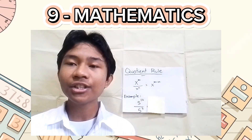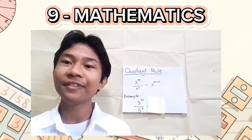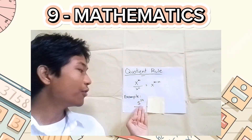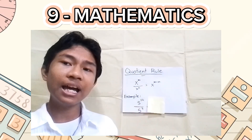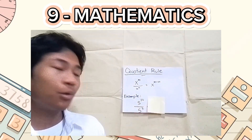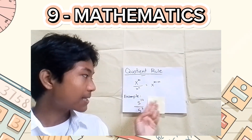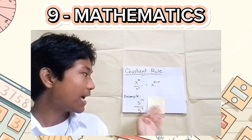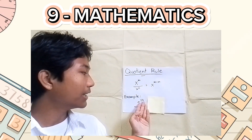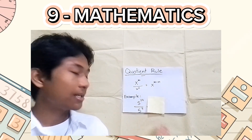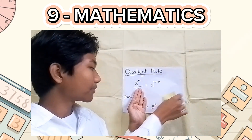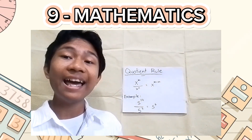Now, to further understand this lesson, let us try to solve an example. Here we have s raised to 10 over s raised to 5. Like what we did earlier, if the variable is the same, we will just copy the variable s and then subtract the exponents. So 10 minus 5 is equal to 5, so the correct answer here is s raised to 5.